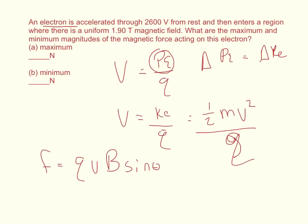You get a maximum charge whenever the sine of theta is equal to 90 degrees and sine theta becomes one. You get a minimum force whenever the sine of theta is equal to sine of zero degrees and that whole term becomes zero and cancels out.